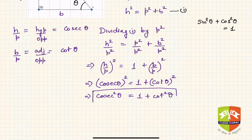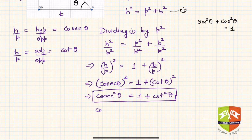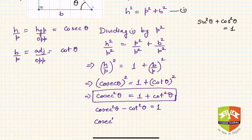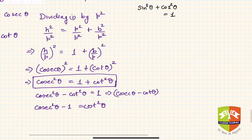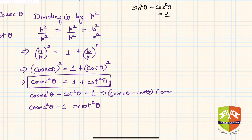This is another very important relationship that will be used a lot in trigonometry. There are many equivalent forms: cosecant squared theta minus cot squared theta equals 1, and another form is cosecant squared theta minus 1 equals cot squared theta.